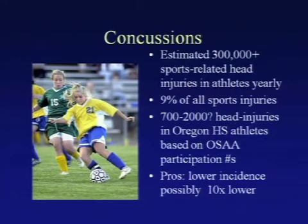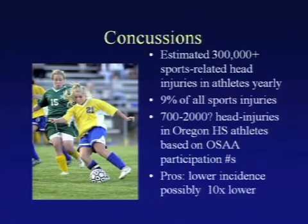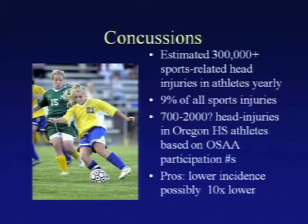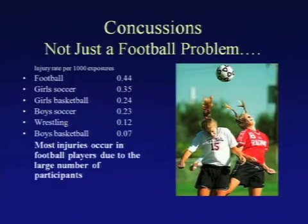How many high school kids really get concussions? One study estimated about 300,000 concussions in high school sports yearly, though that estimate may be as much as 10 times higher. Concussions account for about 9% of all sports injuries. In Oregon, that could be anywhere from 700 to 2,000 head injuries in high school athletes per year. Interestingly, as athletes become professionals the incidence actually goes down, as those more prone to concussions tend to be weeded out earlier.